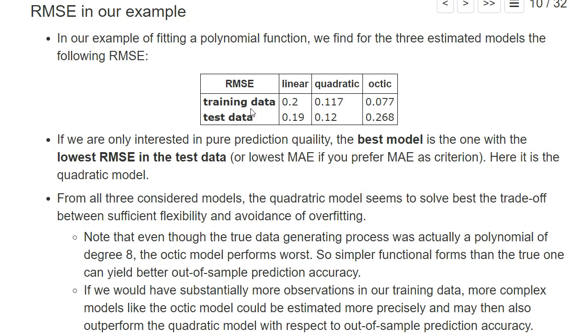This table shows the root mean squared errors for our three specifications: the linear, the quadratic, and the octic specifications, for the training data set and the test data set.